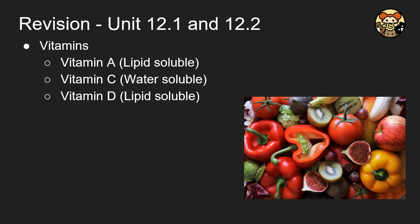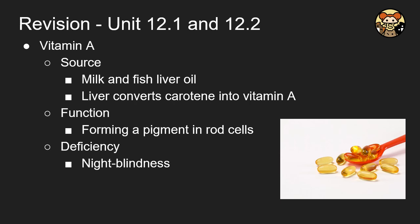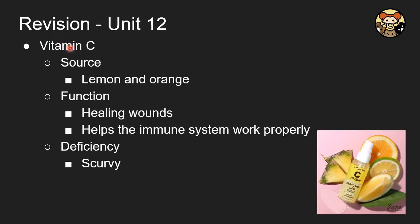Now we move to vitamins. We will cover vitamins A, C, and D. Only vitamin C is water-soluble. As before, we study the source, function, and deficiency disease. For vitamin A, the source is milk, fish, and liver oil. Note that vitamin A is not obtained directly from carrots — the liver converts the carotene in carrots into vitamin A. The function is forming a pigment in rod cells. Deficiency causes night blindness.